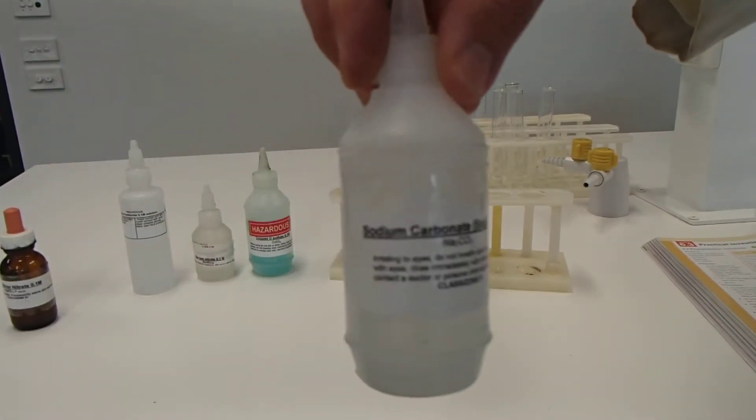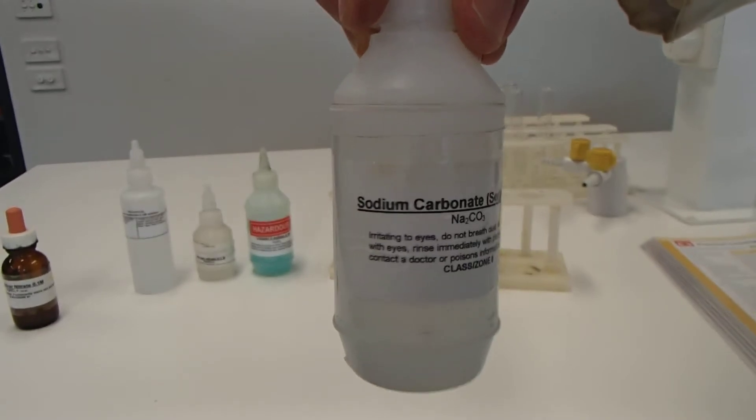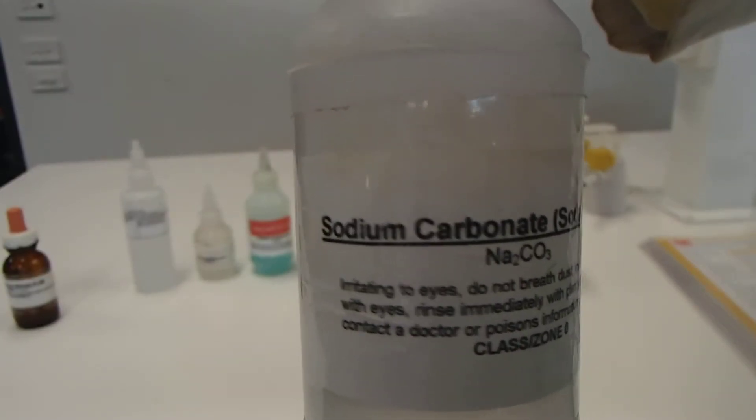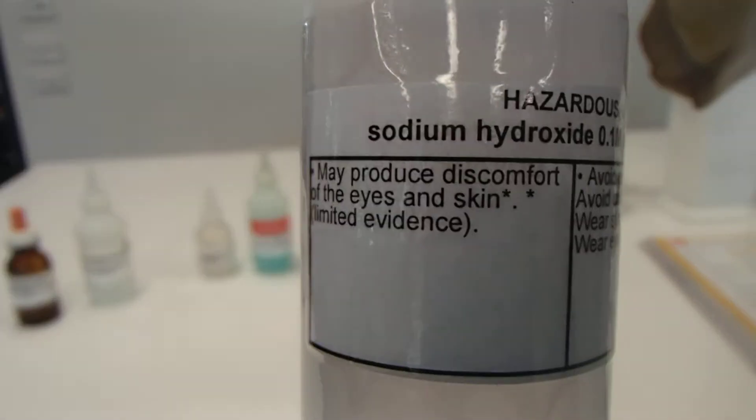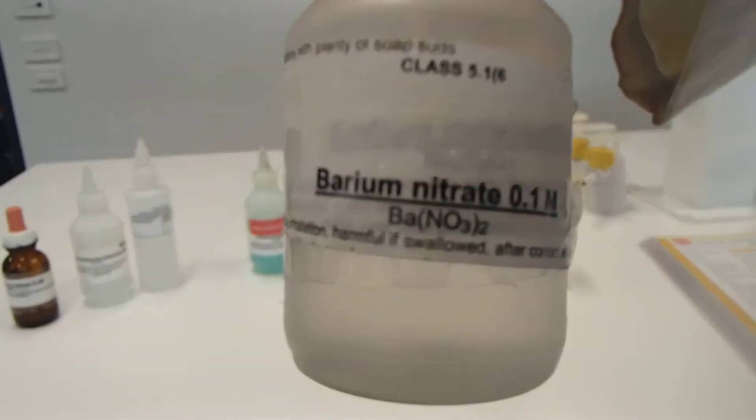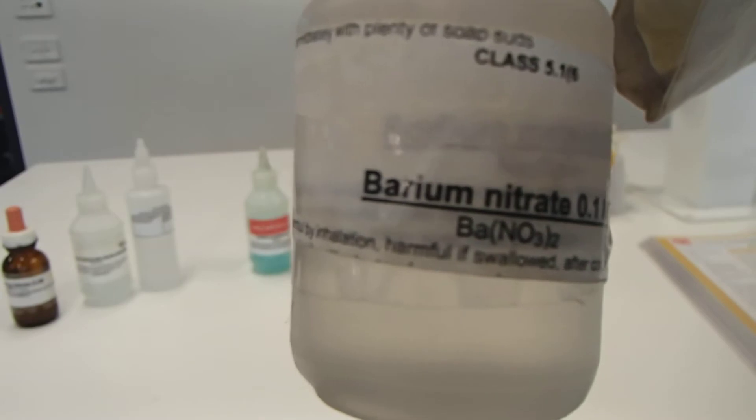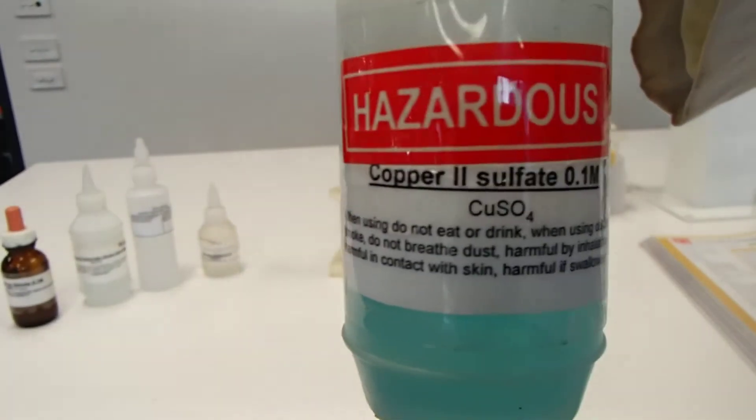We also have sodium carbonate. Sodium carbonate there. Bring that a bit closer so you can see. We have sodium hydroxide. We have barium nitrate. And we also have copper sulfate, copper 2 sulfate. And you can see that all of these solutions are clear. So even though this is blue, it is totally transparent and you can see through it for the copper sulfate.